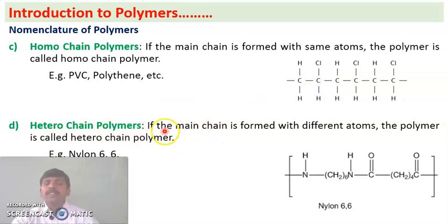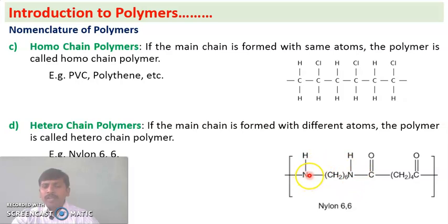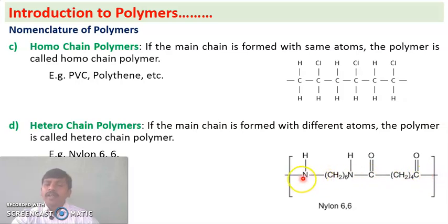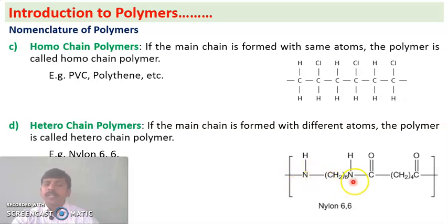Heterochain polymers are polymers in which the polymer chain contains different atoms. Example: nylon 6,6. In the structure of nylon, we have nitrogen atoms bonded to carbon atoms — six carbon atoms, then a nitrogen atom, then more carbon atoms. The polymer chain is made of two different atoms: nitrogen and carbon. If the polymer chain contains two or more different atoms, it is called a heterochain polymer.